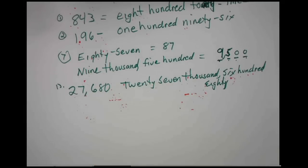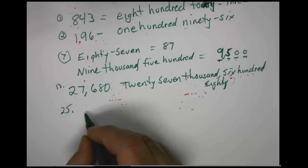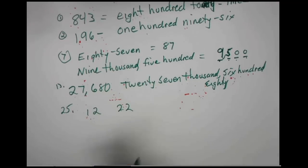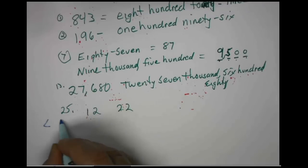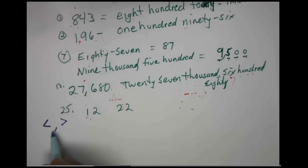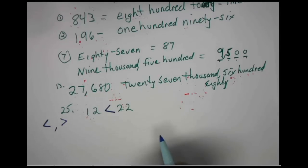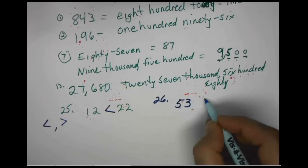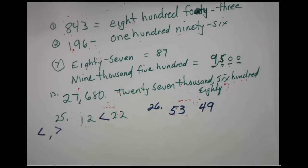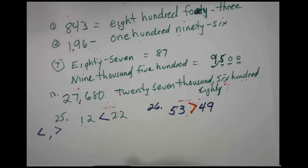Objective number 2, starting with problem number 25, they're asking us to write an inequality statement about two numbers. The example is 12 and 22. Reading left to right, 12 is indeed less than 22, so we fill in the less-than inequality sign. Number 26, right next to it, asks us to compare 53 and 49. Reading left to right, 53 is greater than 49, and that's what we fill in.